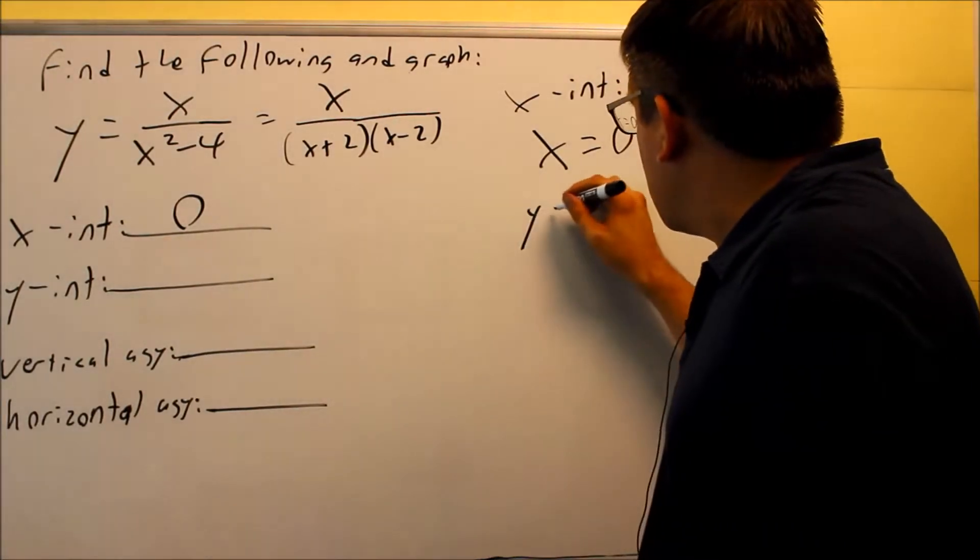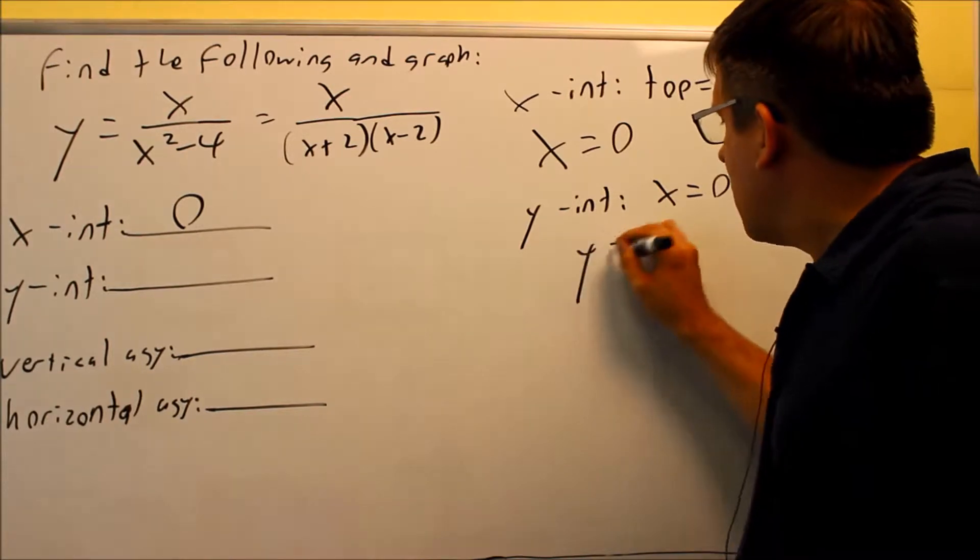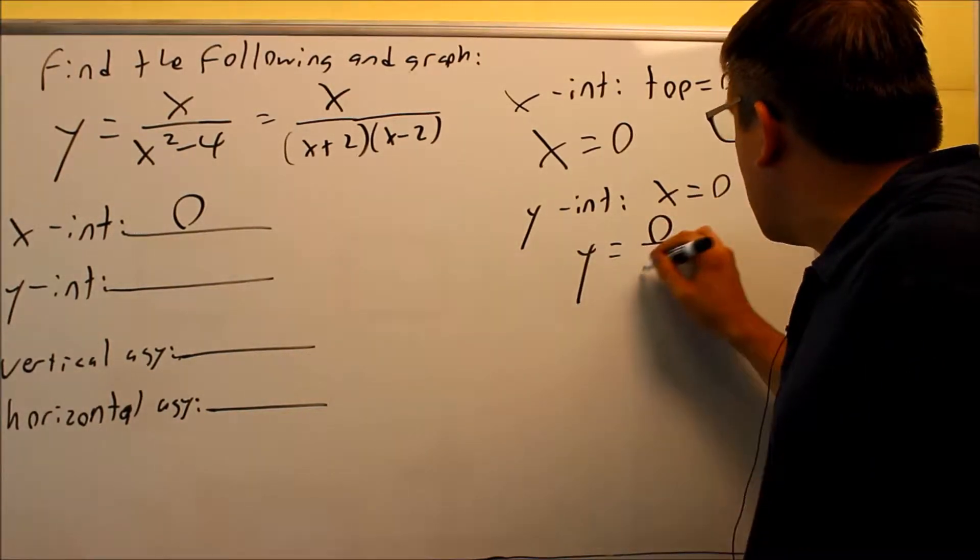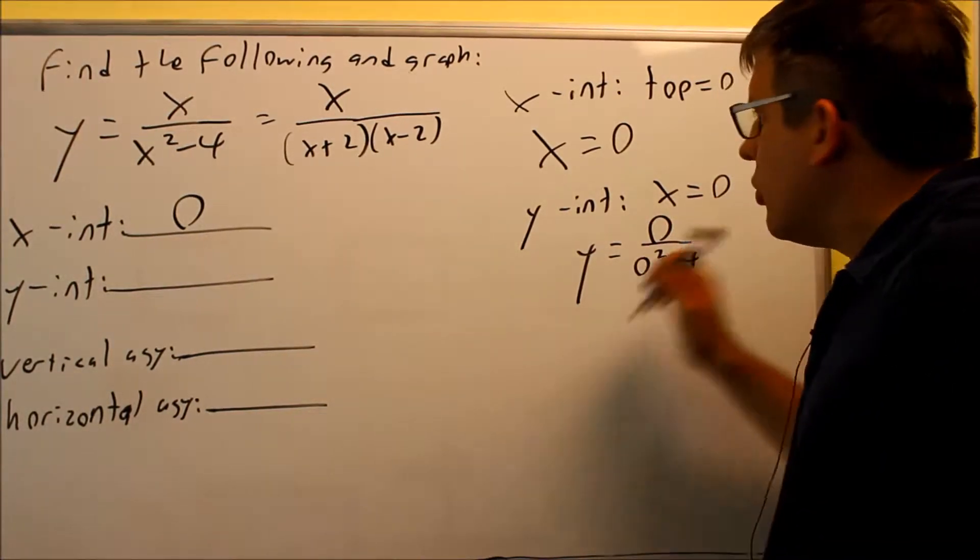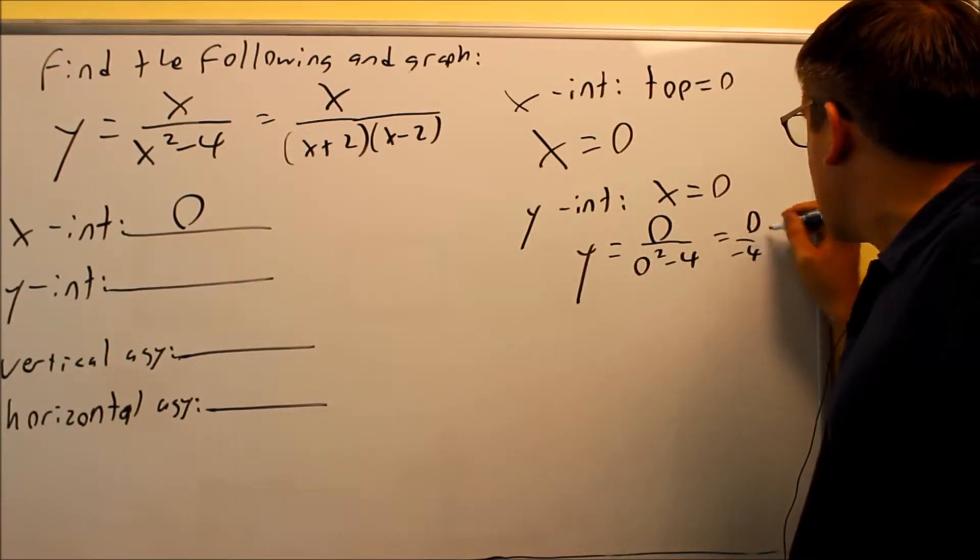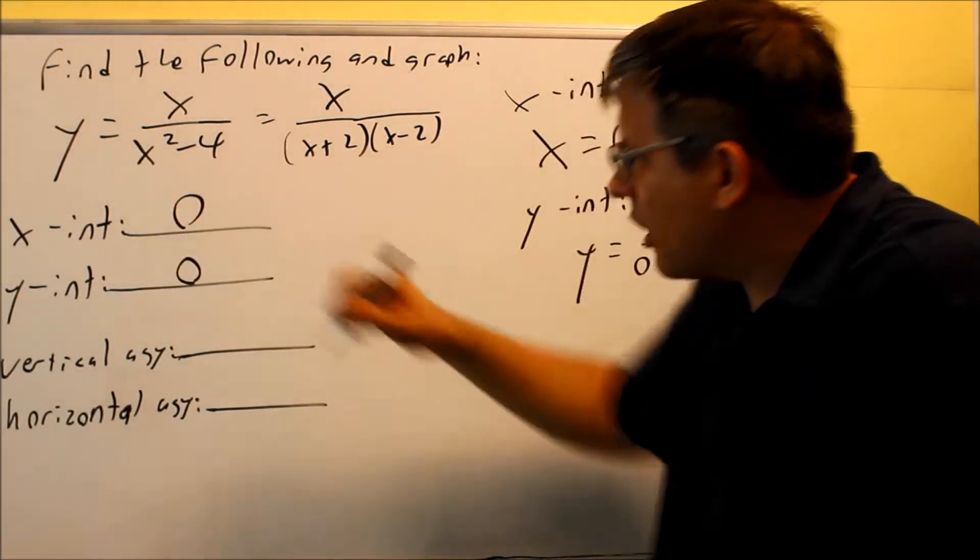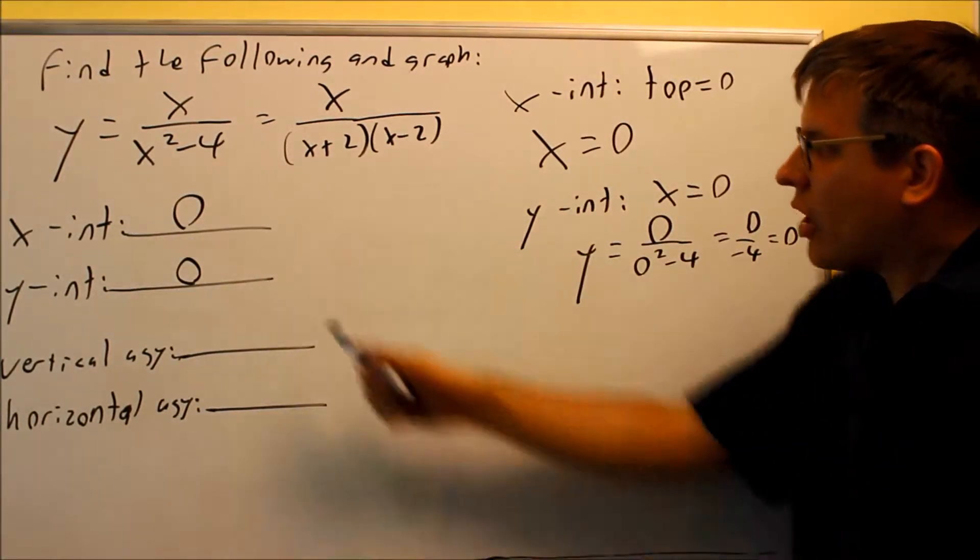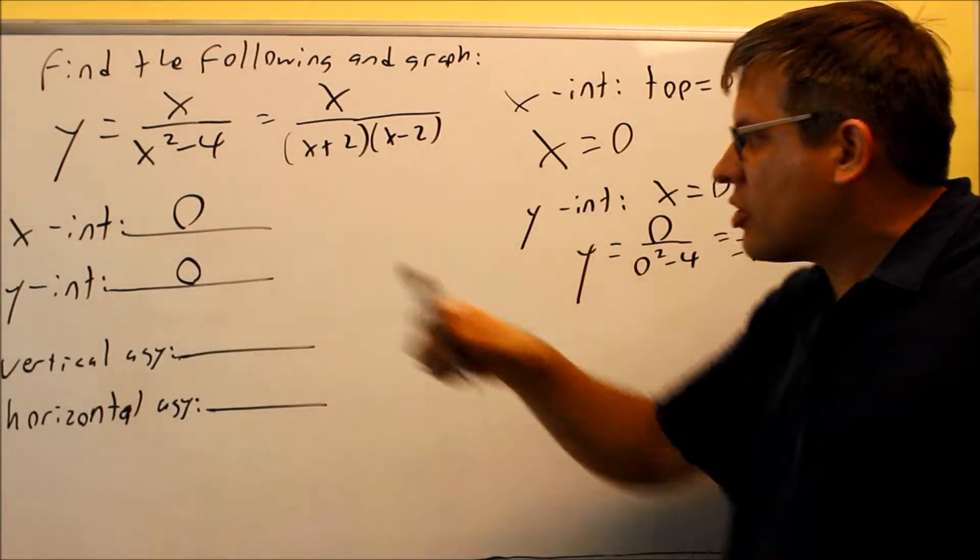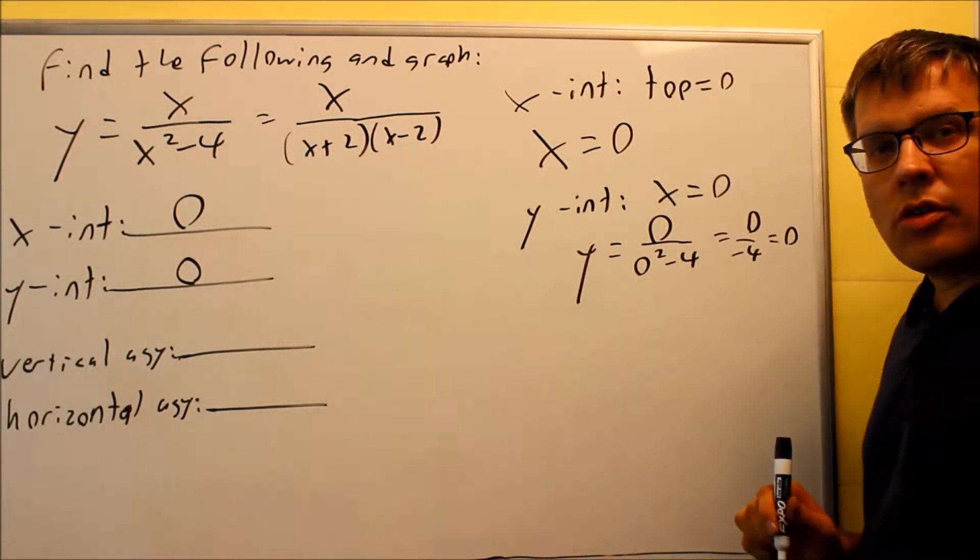If we do Y-intercept, the Y-intercept is where you put a 0 in for X. And if you do that, you get 0 over 0 squared minus 4 if you use the original one. That gives you 0 over negative 4. If 0 is on top, that's okay. That's going to end up being 0. So again, it goes through the origin. You could have also just automatically put down 0 because the X-intercept is 0, that means Y-intercept is going to have to be 0 as well.